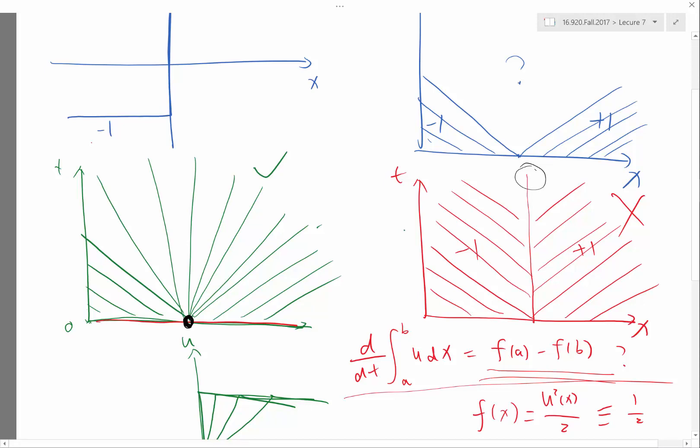So the entropy condition is basically saying that things diffuse, which means you lose information and so here you are actually generating information from nothing. So one sentence to summarize the entropy condition is that you should never have characteristics running out of a discontinuity. Characteristics can only run into discontinuity, cannot run out of discontinuity. So the upwind scheme actually doesn't really work in this case.